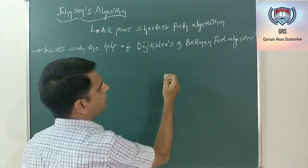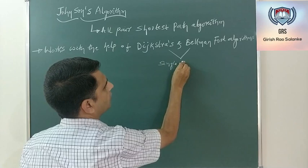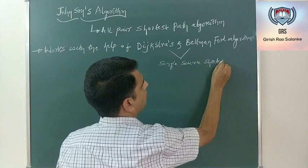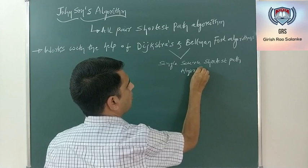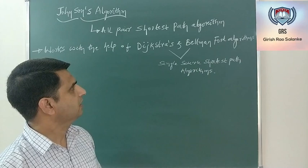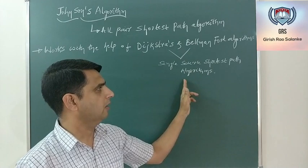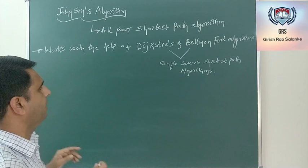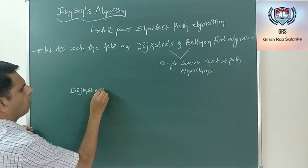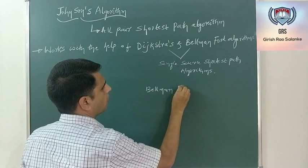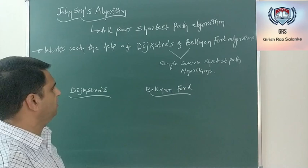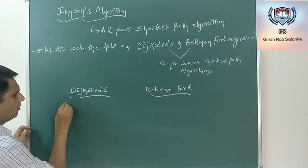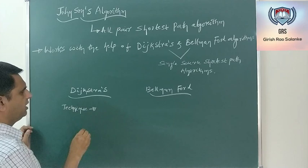Both Dijkstra's and Bellman-Ford algorithm, as we have seen, are single source shortest path algorithms. Even though Johnson's algorithm uses the concept of Dijkstra's and Bellman-Ford — which are single source shortest path algorithms — Johnson is an all-pairs shortest path algorithm. Before going to discuss Johnson's algorithm, let's see the difference between Dijkstra's and Bellman-Ford. The design technique used in Dijkstra's is greedy.